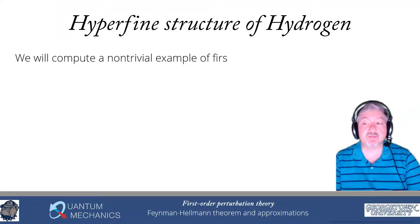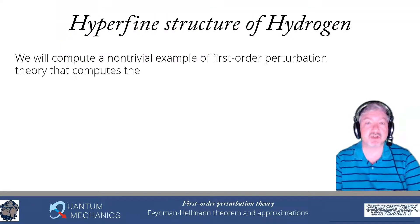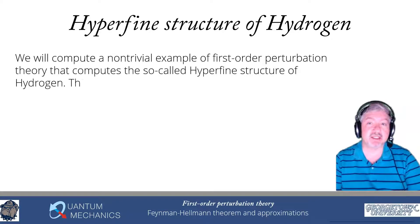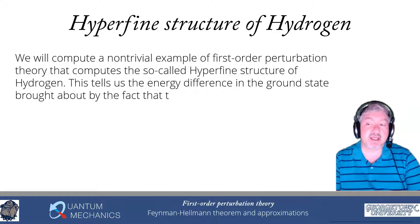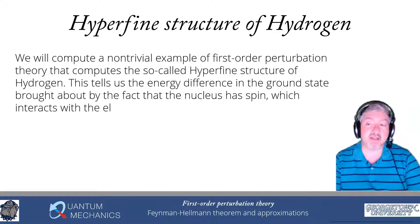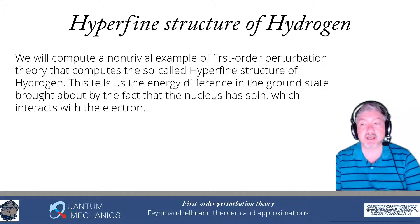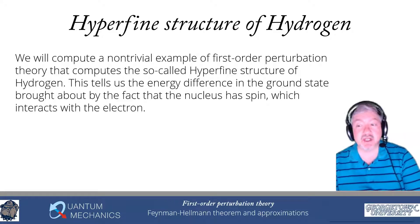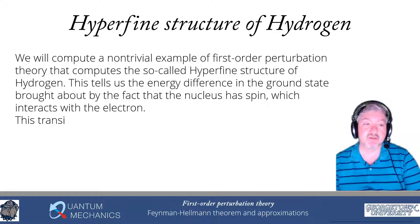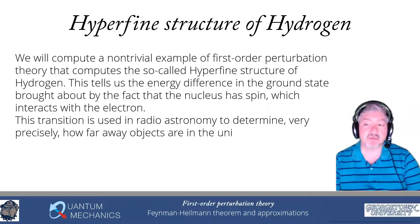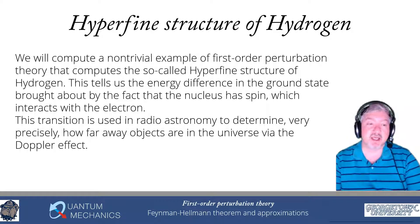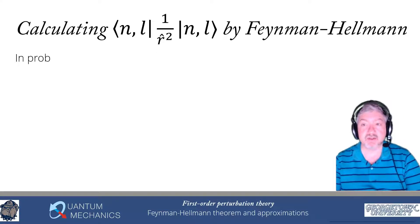We're going to apply this to a very non-trivial and important problem: the hyperfine structure of hydrogen. The ground state has an electron with spin one-half that interacts with a nucleus that also has spin one-half. That interaction changes the energy, giving two energy levels rather than one. The transition between those two energy levels is extremely important in radio astronomy because the state is very long-lived — its lifetime is something like 10 million years. We can determine very precisely the Doppler shift for that transition line, which allows us to determine how far different objects are in the universe using the redshift.